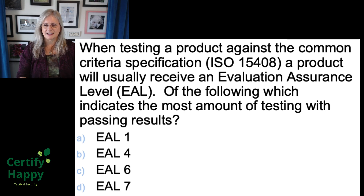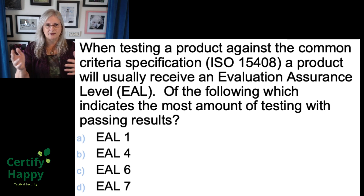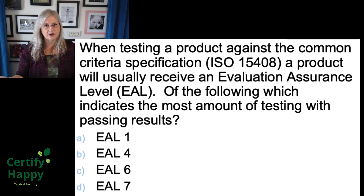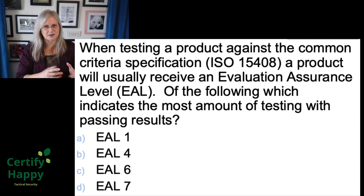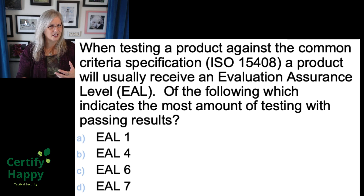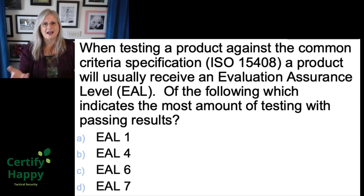Which indicates the most amount of testing? It's on a scale of EAL one to seven — one being the lowest, seven being the highest. Pretty much everything you'll see in CISSP and CCSP follows that: one is always the lowest and it climbs up from there. But the question says 'with passing results' — does that modify the answer in some way? Does it change what it is? Passing results for a specific product? I don't have a specific product. What is this question asking?